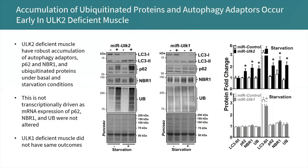Next, we wanted to understand how autophagy is affected at critical steps in the absence of ULK-1 or ULK-2. As mentioned, LC3-1 to LC3-2 conversion is essential for initiation of autophagy. In ULK-2 deficient muscle, LC3-1 to LC3-2 conversion is unaffected, as shown by these representative western blots. However, there is a slight impairment in LC3-1 to LC3-2 conversion in ULK-1 deficient muscle. Most importantly, p62, NBR1, and ubiquitin — which tag cargo to be brought into the forming autophagosome — all accumulate under both basal and starvation conditions in ULK-2 deficient muscle, suggesting that ULK-2 plays an important role in this aspect.